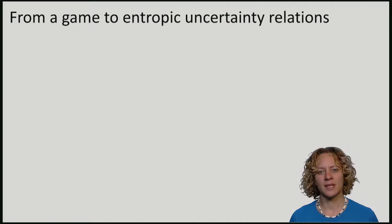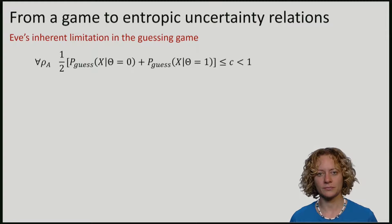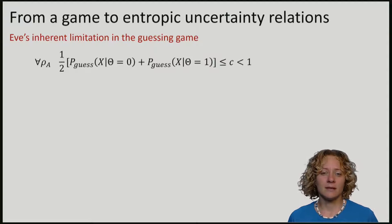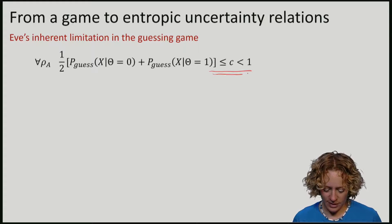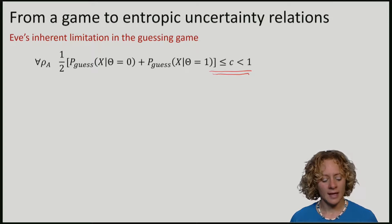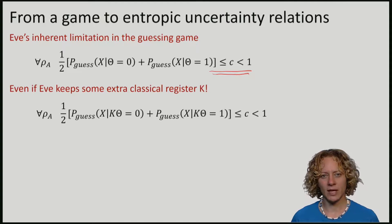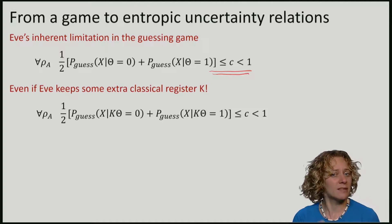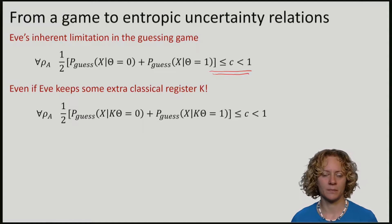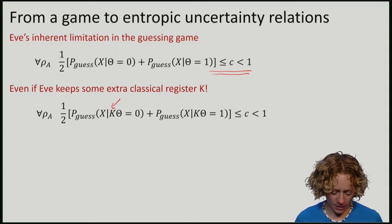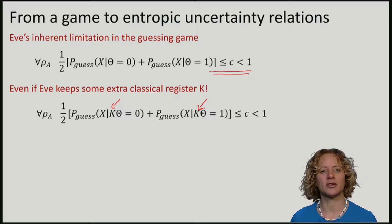Let me remind you that this is an inherent limitation in Eve's guessing game. So here there is a constant which is less than one. This is true even if Eve gives some classical information about the state that she prepared. So K is a classical register that contains some information, which density matrix or what other information that Eve may collect. I have written K here to emphasize that Eve holds some additional information.